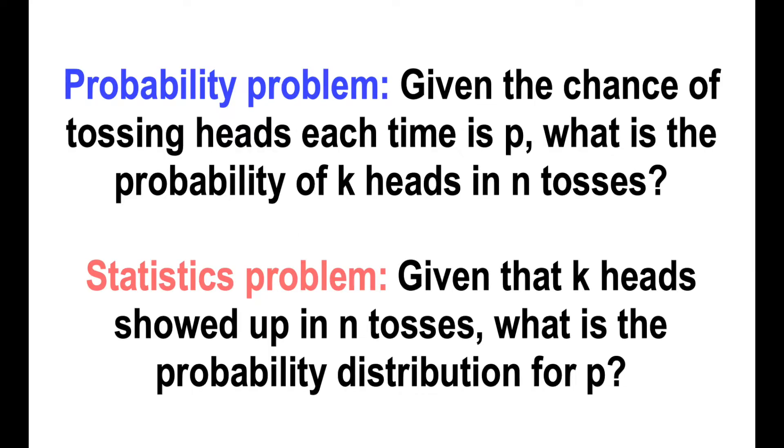In probability, we assume we know p, the chance of heads each time, and we ask questions like what's the probability of k heads in n tosses. But in statistics, we're going the other way. Given that we got some data, how likely are different values of p?